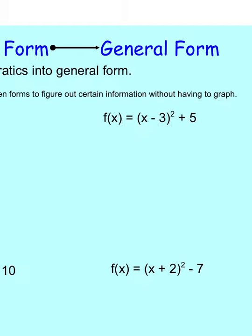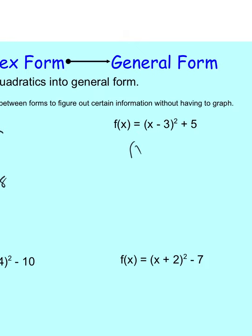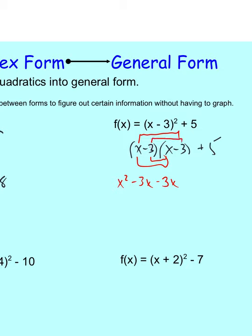Looking at the second one: same sort of deal. We take x minus 3 and expand it to x minus 3 times x minus 3, then add 5. FOIL: first is x squared, outside is negative 3x, inside is another negative 3x, and last is negative 3 times negative 3, which is plus 9, plus 5 at the end. Combining like terms: x squared, the two negative 3x's together are negative 6x, and plus 9 and plus 5 gives us plus 14.